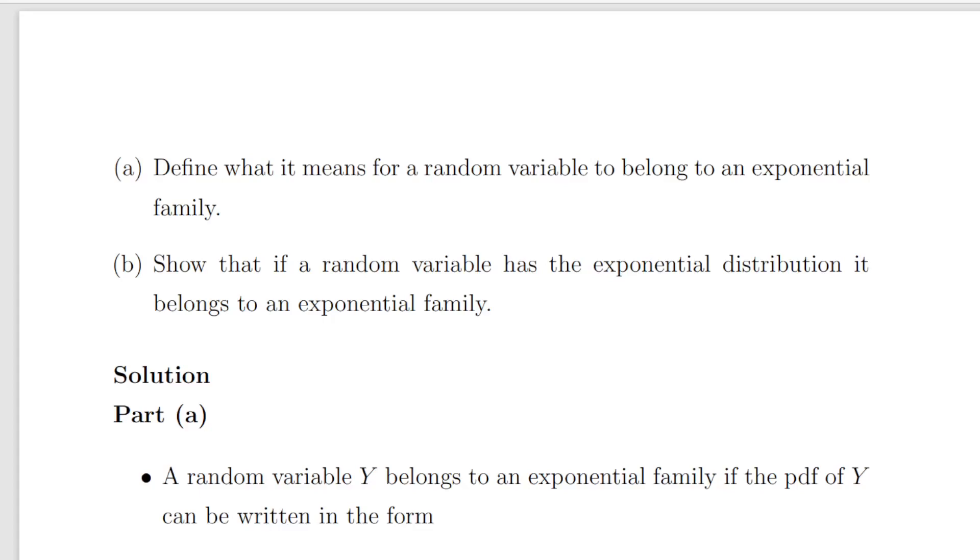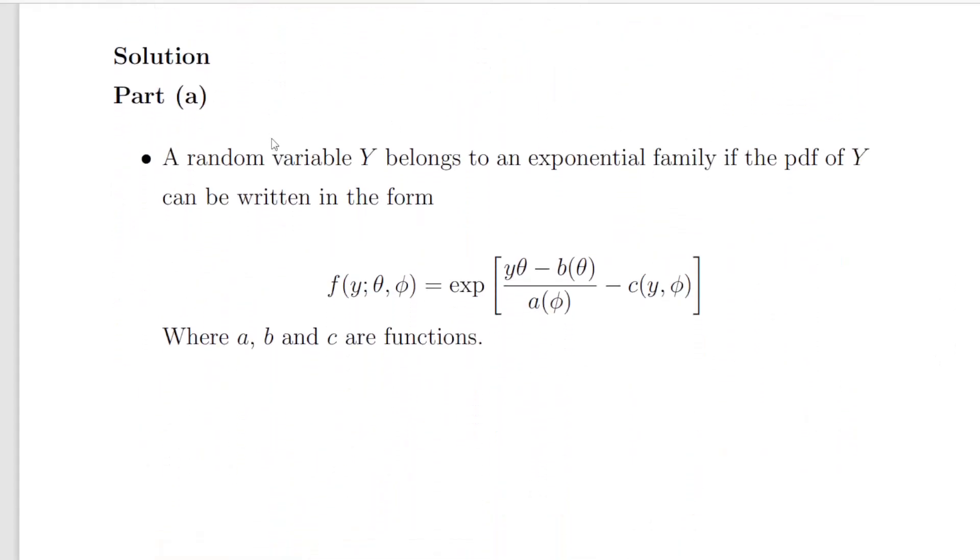Using our definition should be straightforward enough, but it's just to map things out properly. So Part a: a random variable Y belongs to an exponential family if the probability density function of Y can be written in the following form. Here we have f of Y and there's two other parameters, theta and phi.